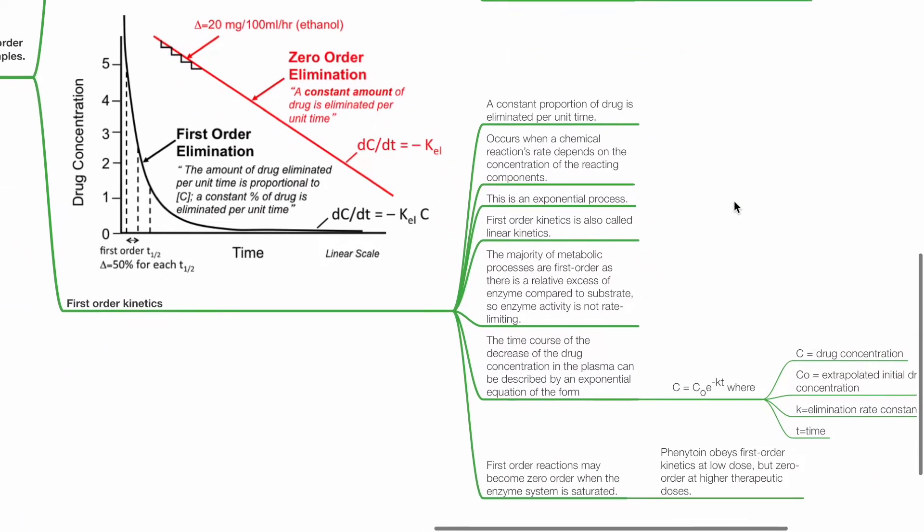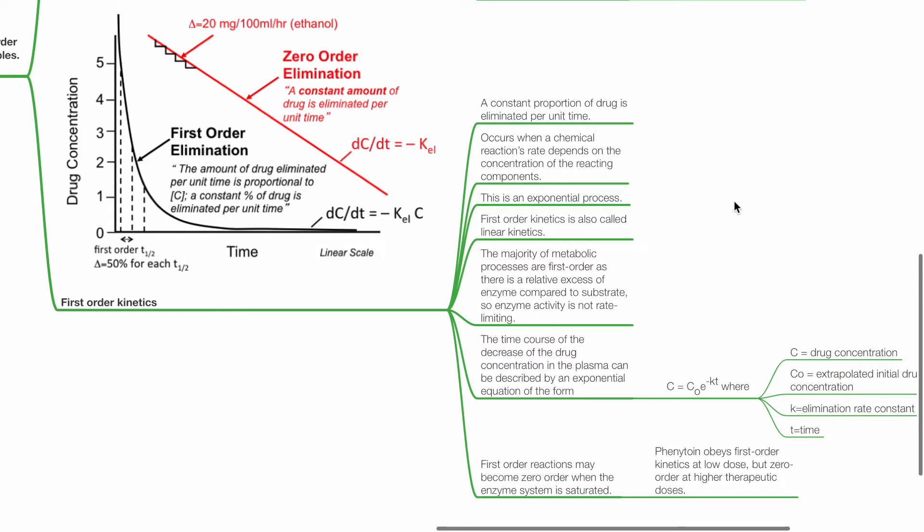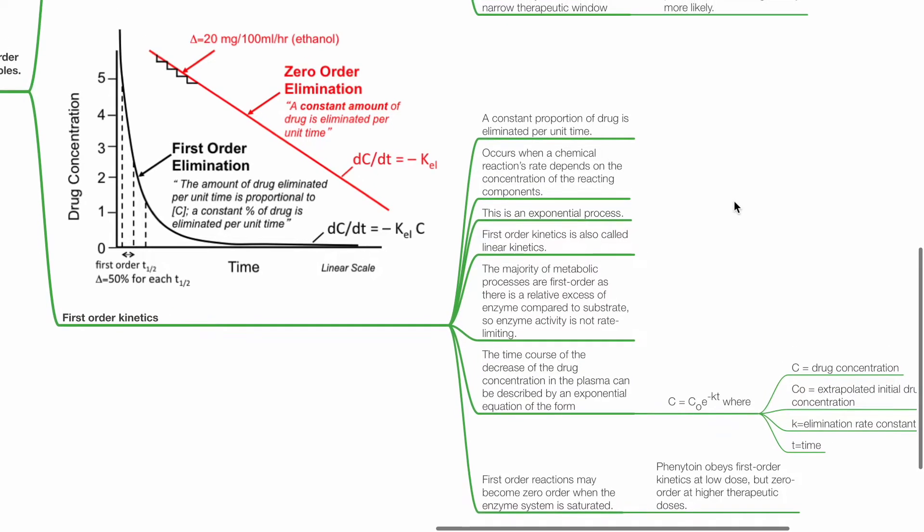In first-order kinetics, a constant proportion of drug is eliminated per unit time. It occurs when a chemical reaction's rate depends on the concentration of the reacting components. This is an exponential process.